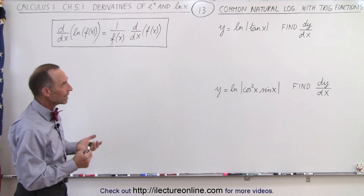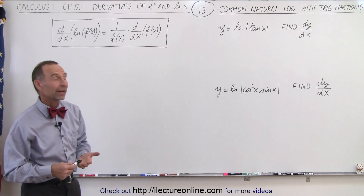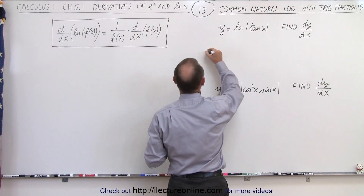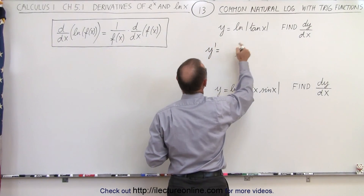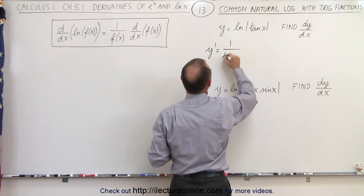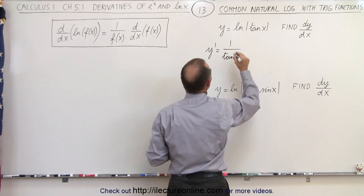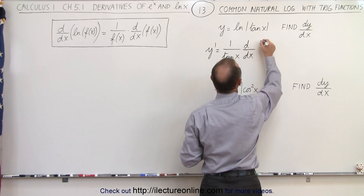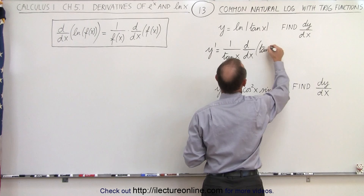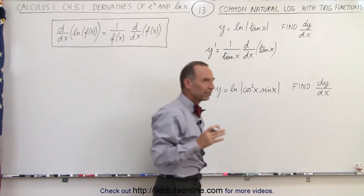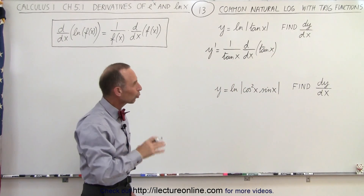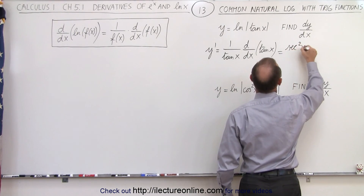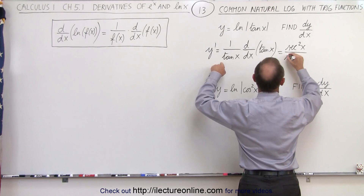Our first example is y equals the natural log of the tangent of x. Find the derivative. In this case, we can say that y prime is equal to 1 over that function — 1 over the tangent of x — times the derivative of the tangent of x. The derivative of the tangent of x is equal to the secant squared of x, so this becomes equal to secant squared of x divided by the tangent of x.